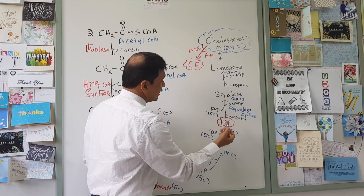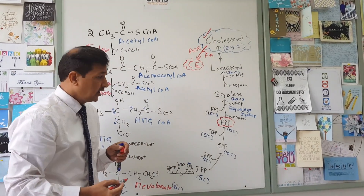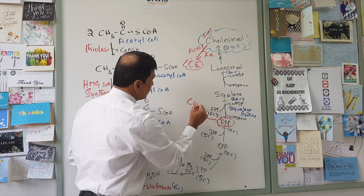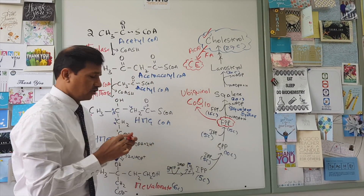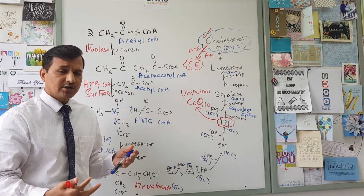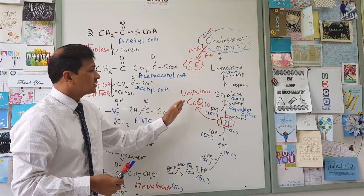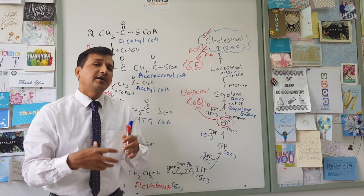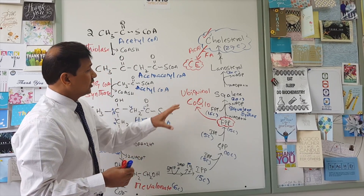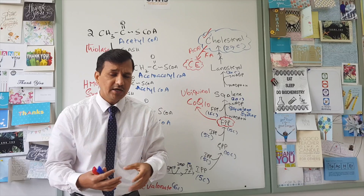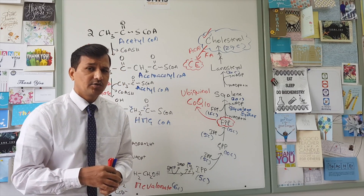FPP — farnesyl pyrophosphate — is not only going into cholesterol biosynthesis; it is also used in the synthesis of coenzyme Q10, which is also called ubiquinone. Ubiquinol is the reduced form and ubiquinone is the oxidized form. This coenzyme Q10 is involved in the electron transport chain — it is one of the mobile components in the electron transport chain, participating in making ATP synthesis.